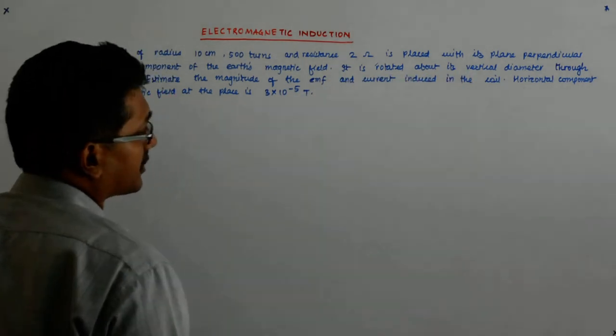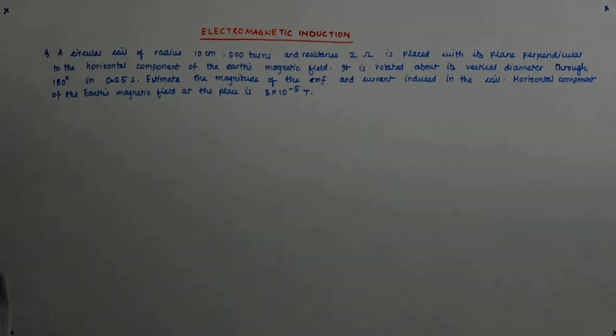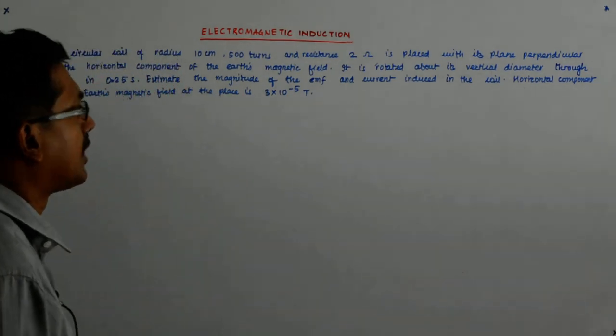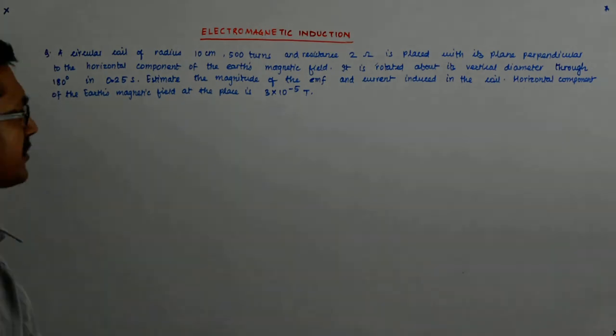It is rotated about its vertical diameter through 180 degrees in 0.25 second. Estimate the magnitude of the EMF and current induced in the coil. The horizontal component of the earth's magnetic field at the place is 3 × 10^-5 tesla.